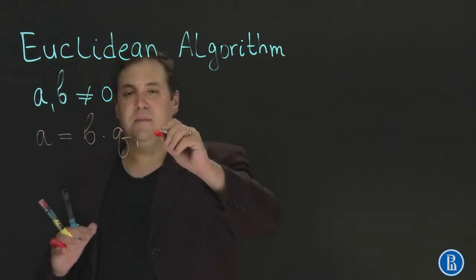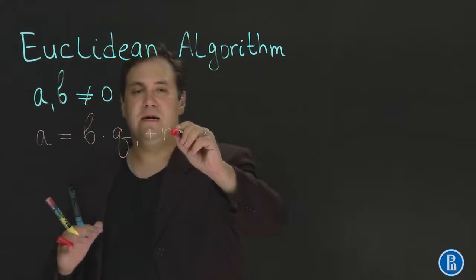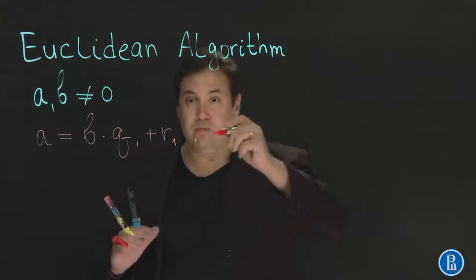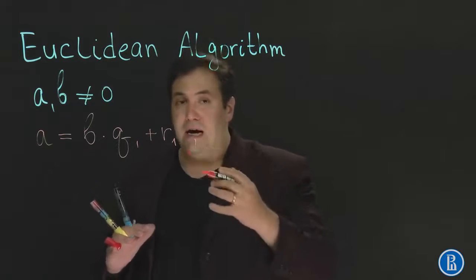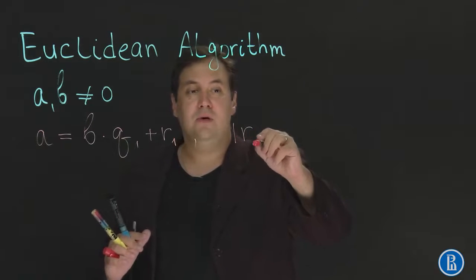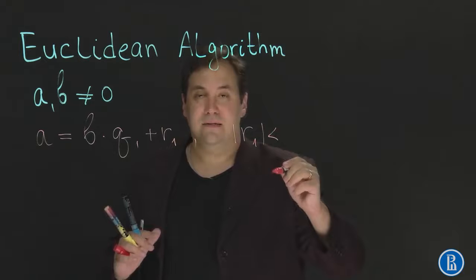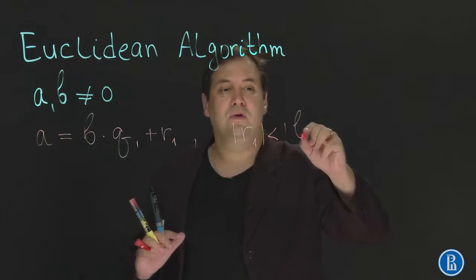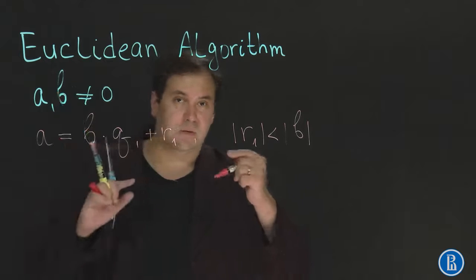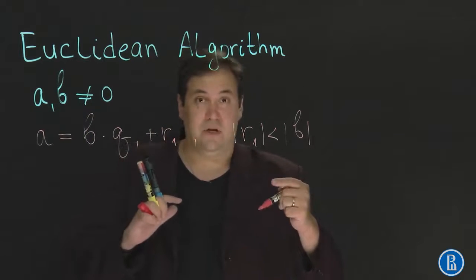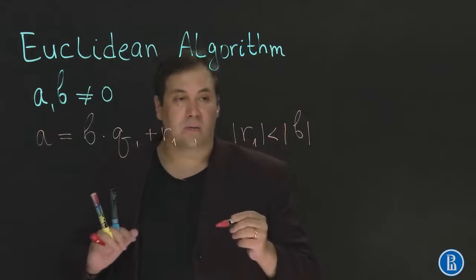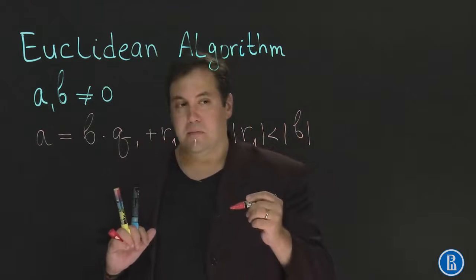Say we have some Q1 plus R1, and the norm of R1 is either 0 or its norm is strictly less than norm of B. Well we need B to be non-zero because otherwise it could have no norm. So the norm of R1 is less than the norm of B.